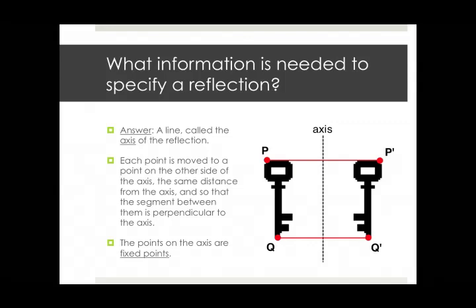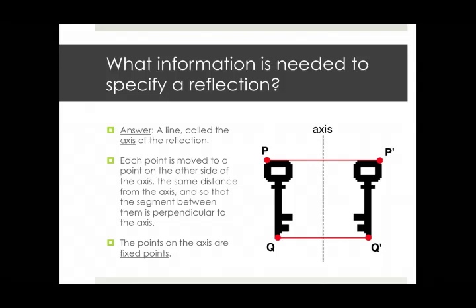Now, if you try to apply that recipe to points on the axis, well, they're already on the axis. And so you, again, are supposed to get a point on the axis. Well, a point that's on the axis, in fact, doesn't get moved. It just stays where it is. So we say that the points on the axis are fixed points.